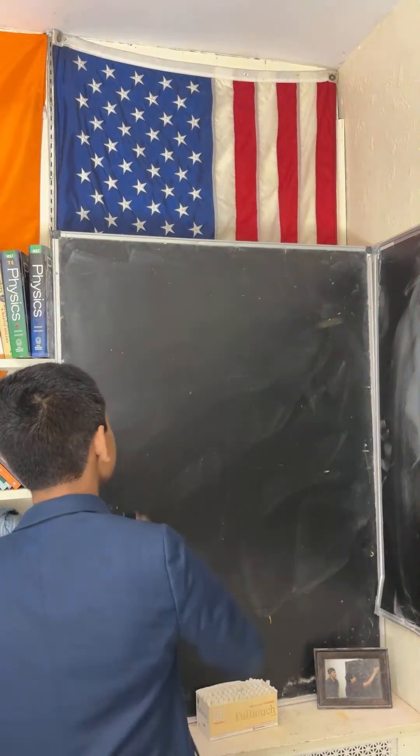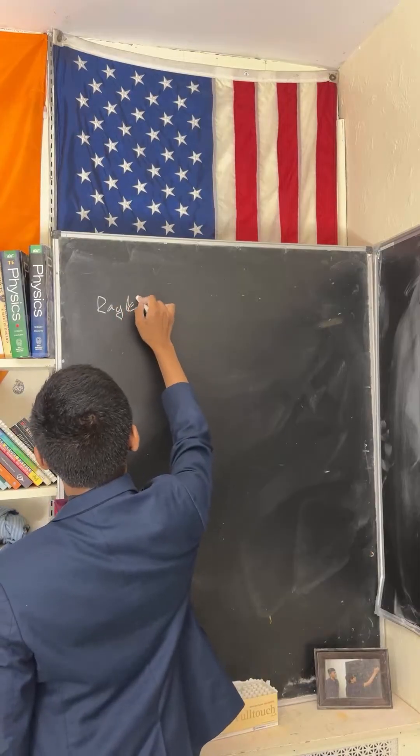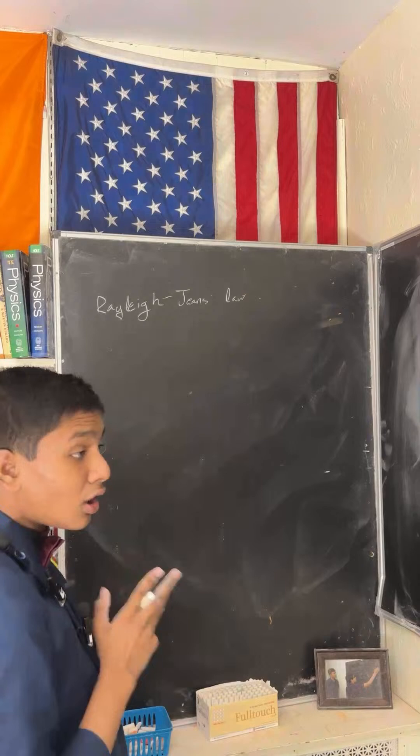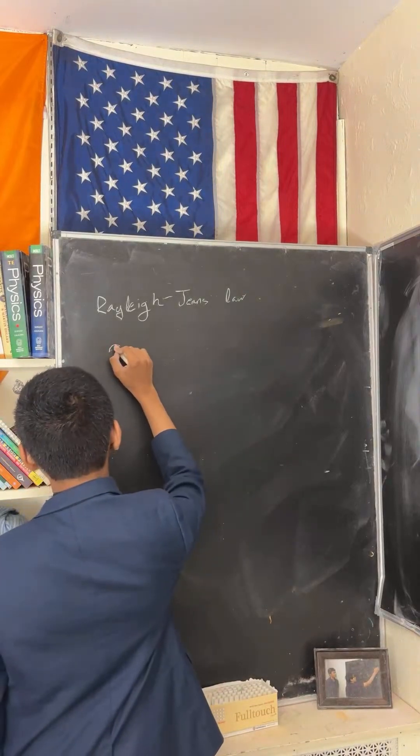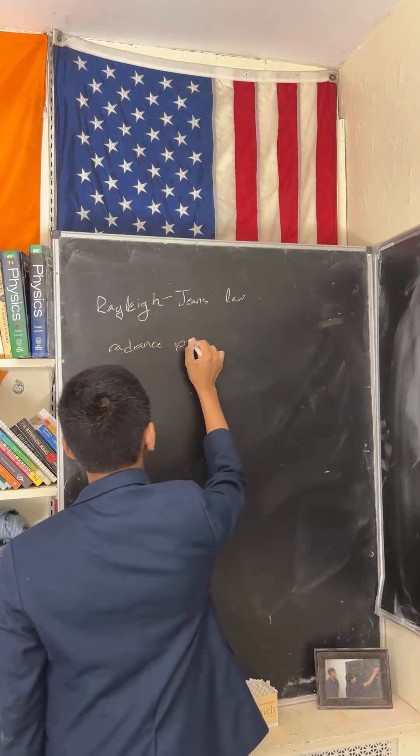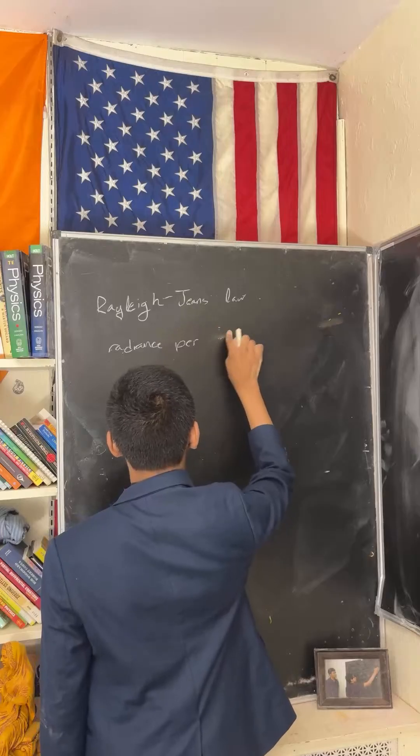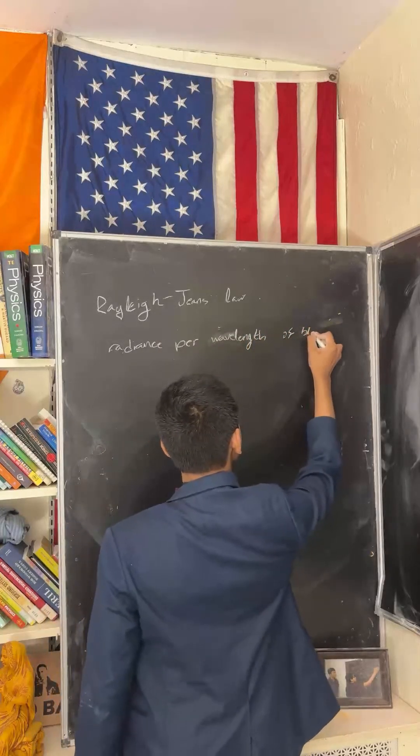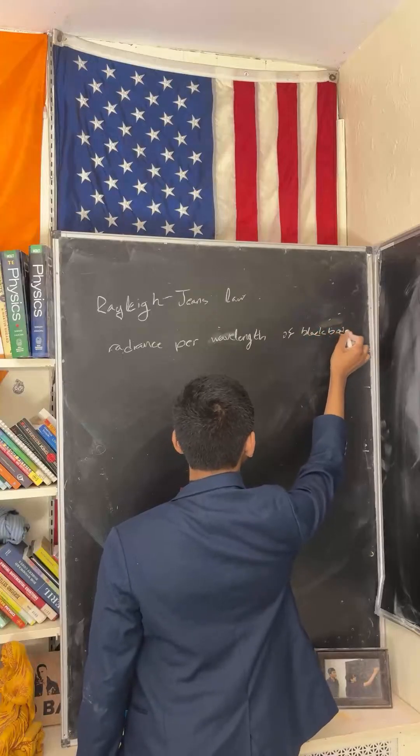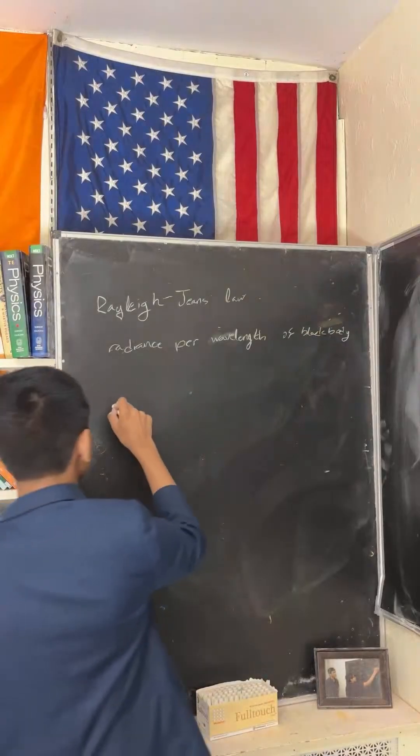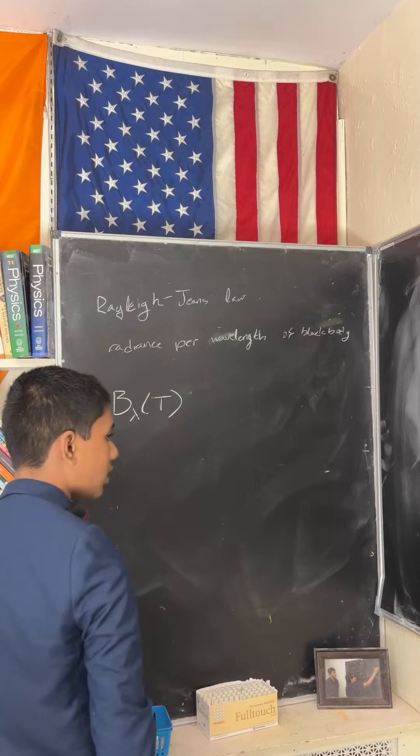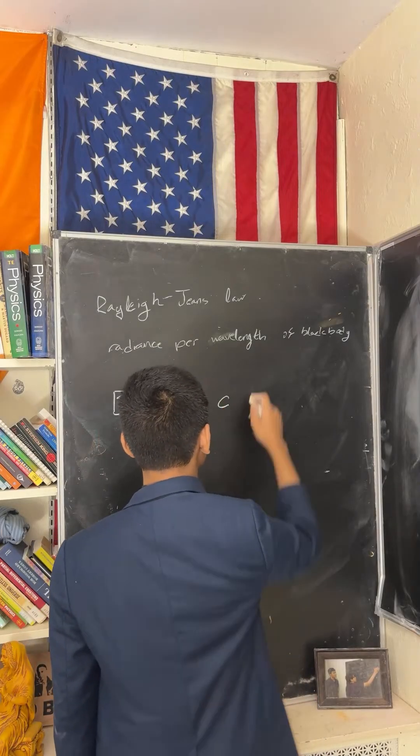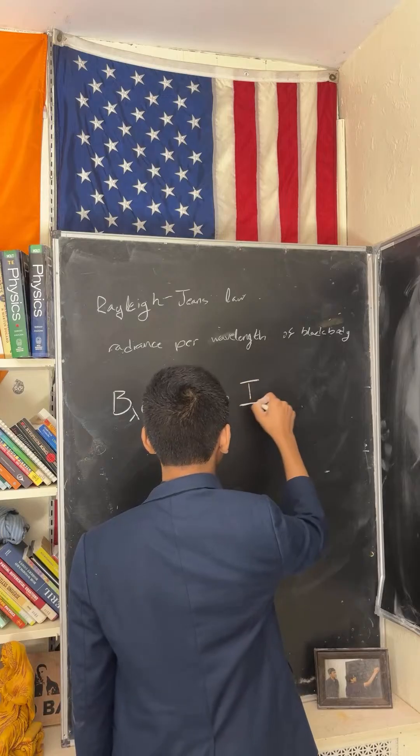So, the Rayleigh-Jeans law, you might recognize the name Rayleigh from Rayleigh scattering. The Rayleigh-Jeans law is a law that talks about the radiance per unit wavelength of a blackbody, also known as spectral radiance. Now, this, which was a function of wavelength and temperature, was essentially written as a constant C multiplied by the temperature T over lambda to the 4.